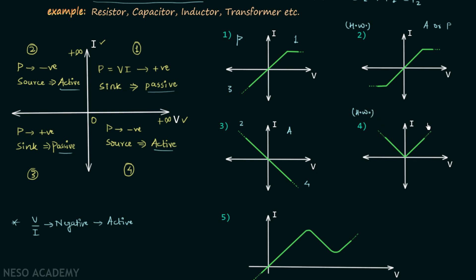The fourth example is again homework — tell me whether the element is active or passive. In the fifth example, the curve appears to be in the first and third quadrants, and you might say the element is passive, but that answer is incorrect.